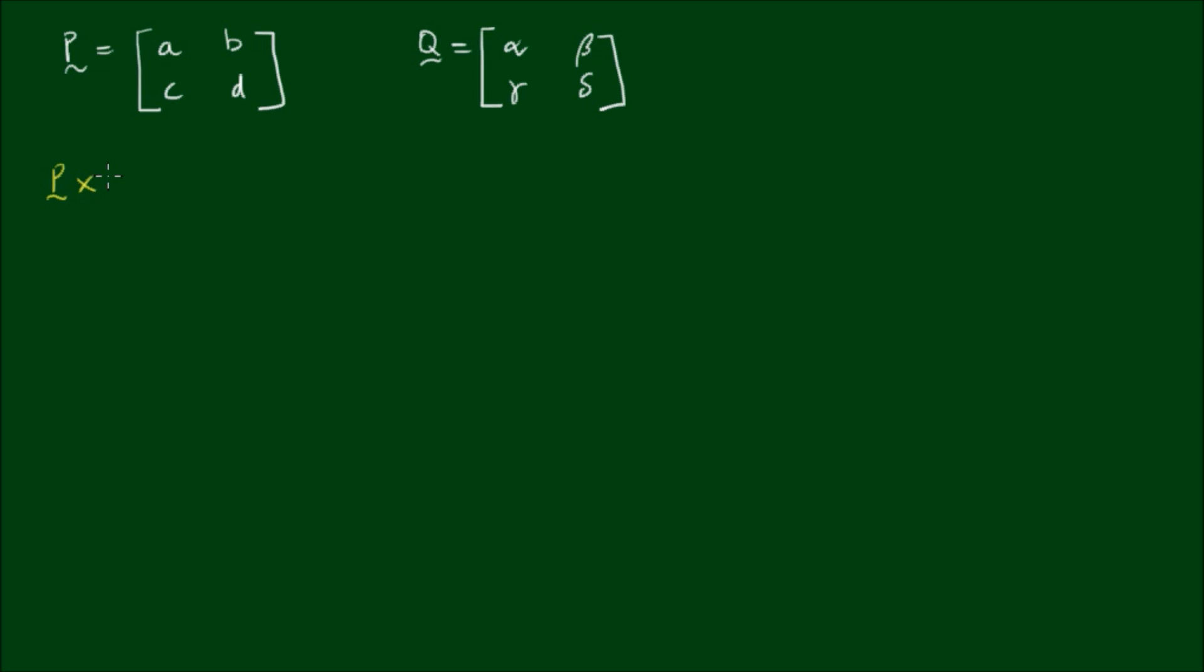Now let's multiply matrix P by matrix Q. So again, it should be familiar now that it's a row by column operation. So we have A by alpha plus B by gamma, A by beta plus B by delta. Again, row by column, C by alpha plus D by gamma and C by beta plus D by delta.